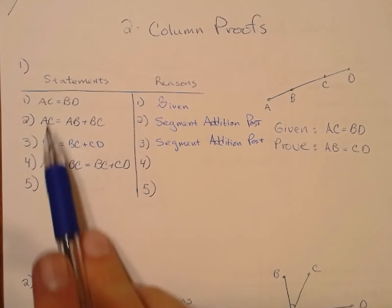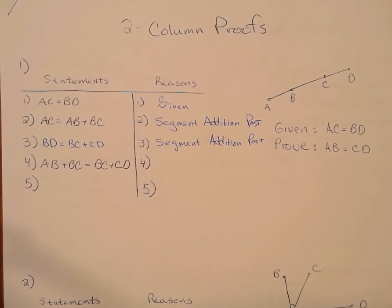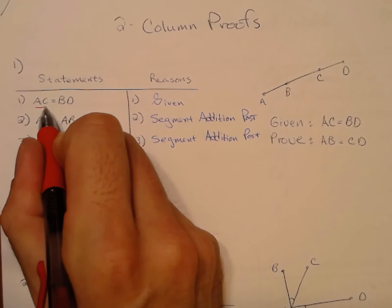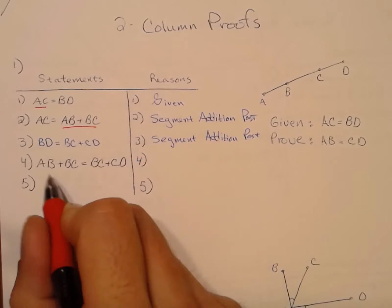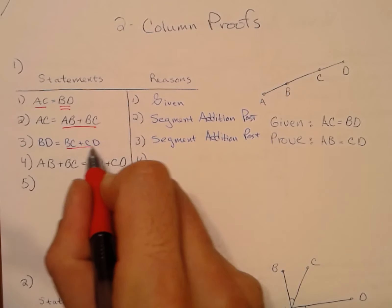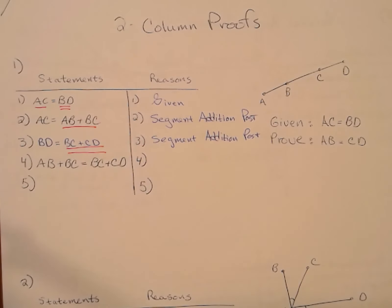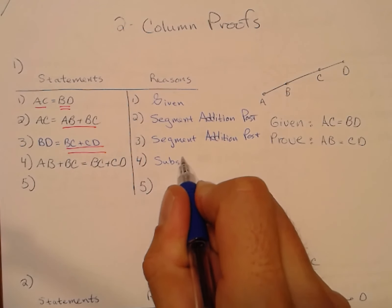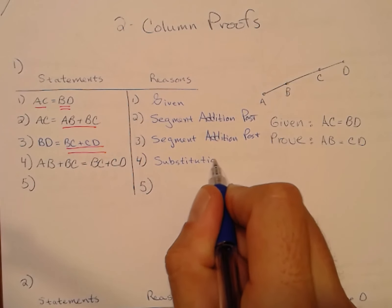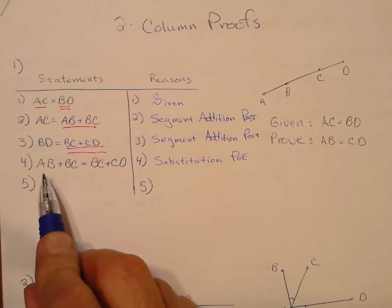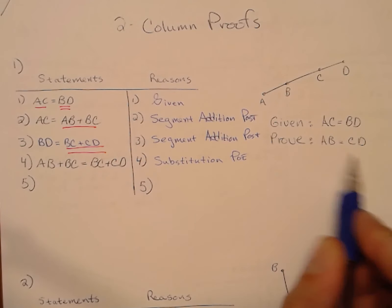Now, how do I take all of these statements and arrive at the next one? I'm basically going to rewrite the equation substituting this in for the left-hand side and substituting this in for the right-hand side — making a couple of substitutions.